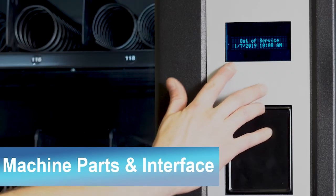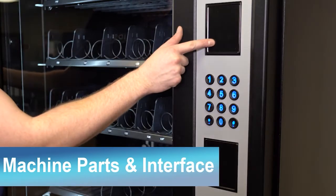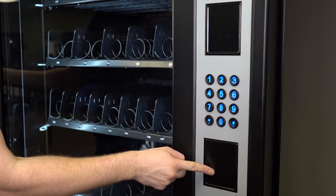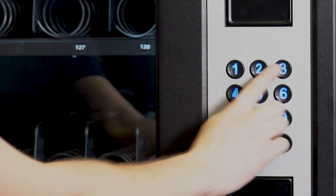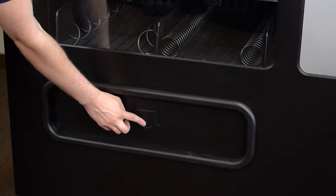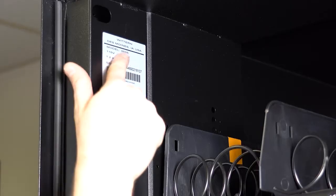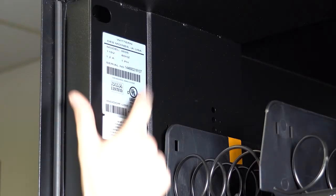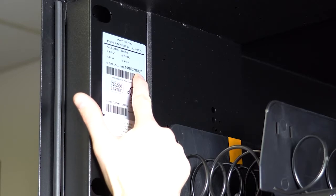Here's the machine display. These two openings right here can be used for card readers. In the middle here is the keypad. Down here is the delivery bin door. Inside the door on the upper left you can find the machine serial number.